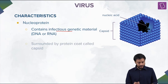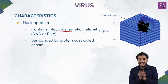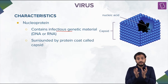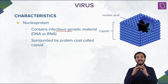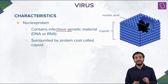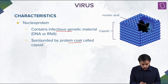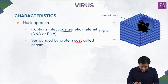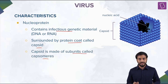Now, these are the capsids. What are capsids? The nucleic acid is covered by a protein coat, and that coat is called a capsid. This capsid helps in protecting — it provides protection to the nucleic acids, to the genetic material. Each capsid is made up of subunits called capsomers.